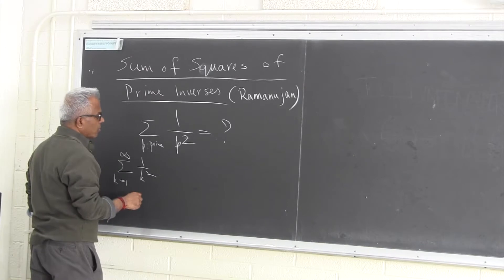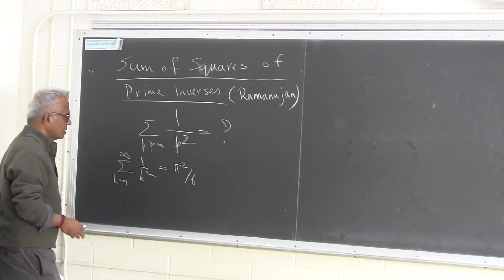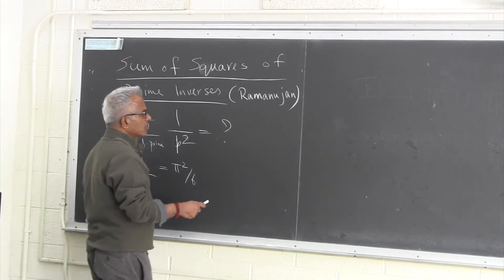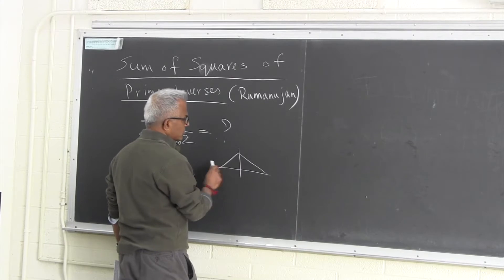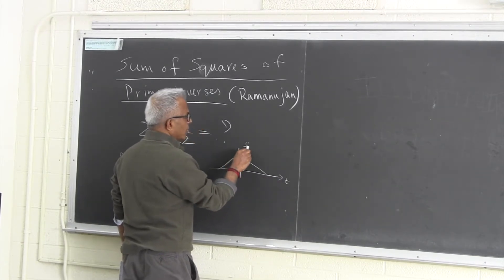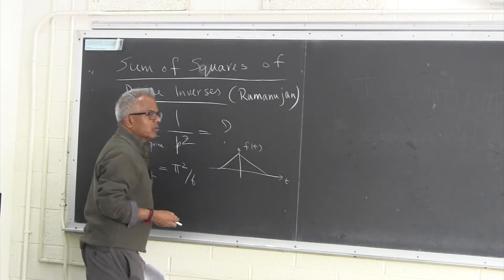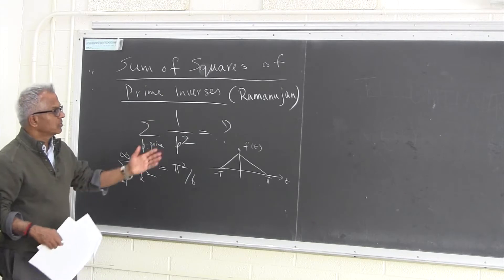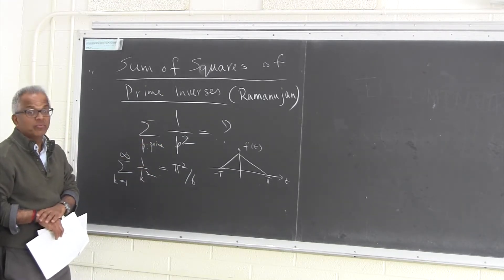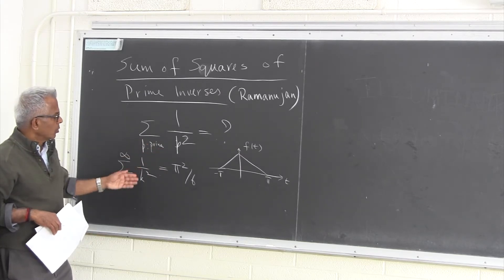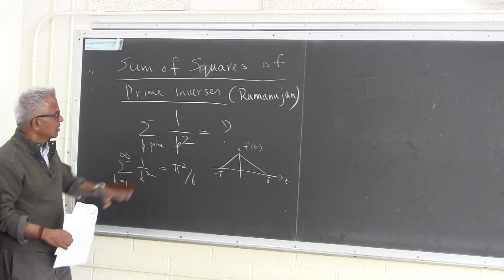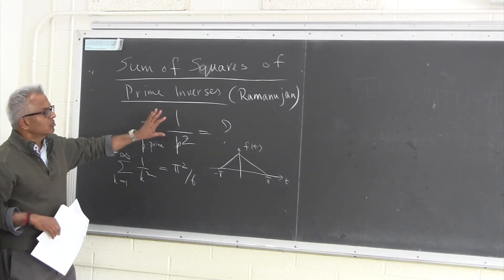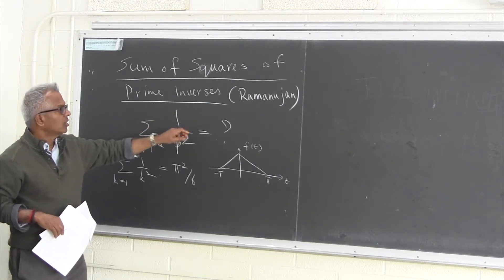If I take 1 over k squared over all integers, this is summable — it equals π² over 6. This can be shown using the Fourier series expansion of a symmetric function; the terms turn out to be 1 over k squared. Of course, the primes are a subsequence of all integers, so if the sum of all integer square inverses converges, consequently this series over primes converges too. The question is how much it is.